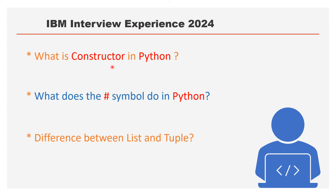The fourth question is: what is a constructor in Python? This is a basic question you can answer if you are familiar with the language. Next is: what does the hash symbol do in Python? Also basic. Then, the difference between list and tuple — mark this as very important. About 99% of interviewers will ask this if Python is your skill set.